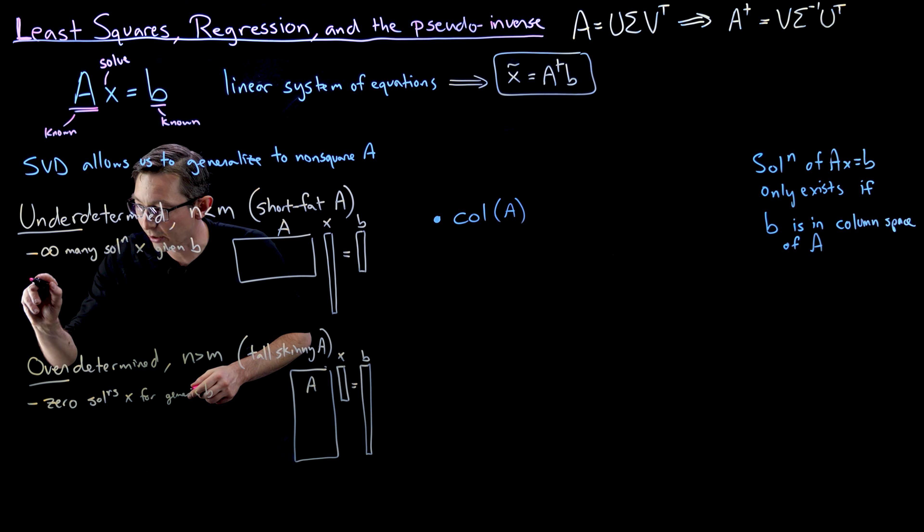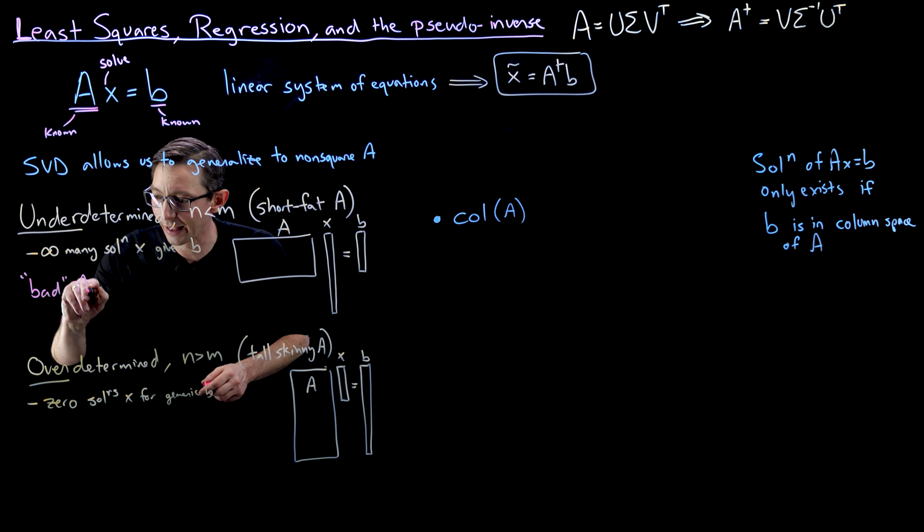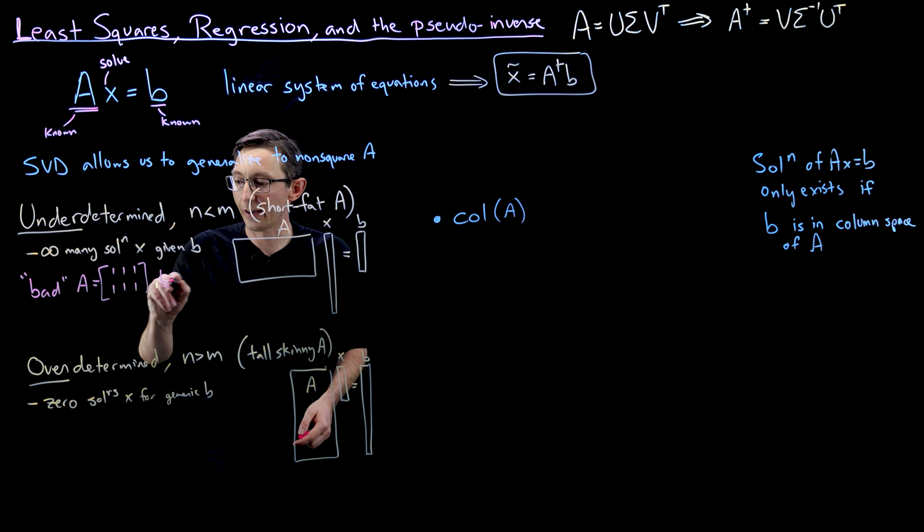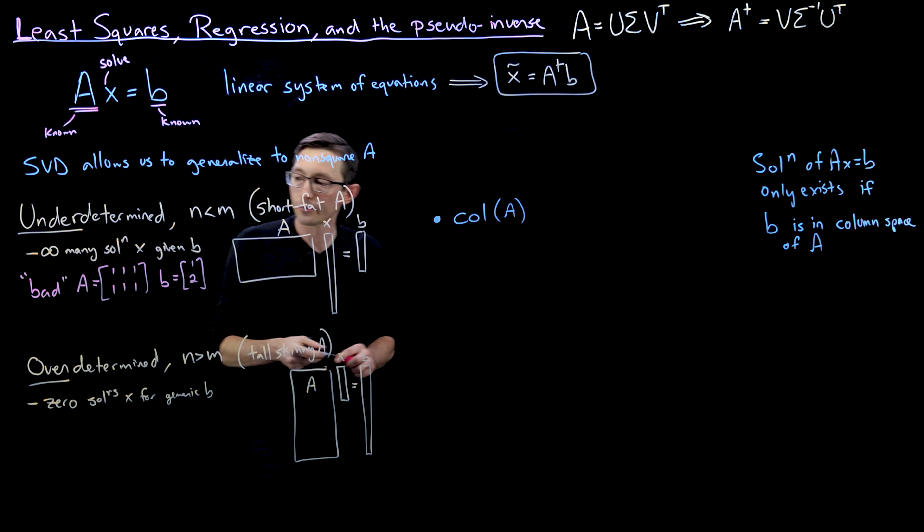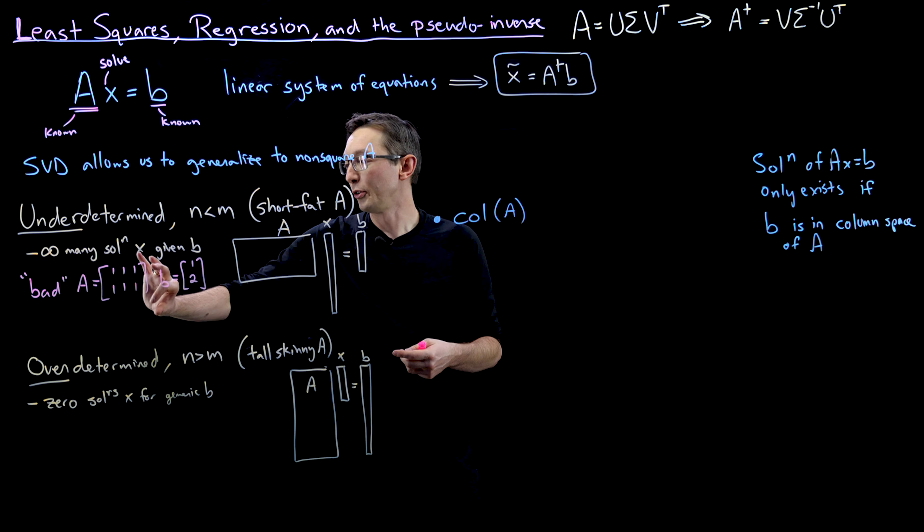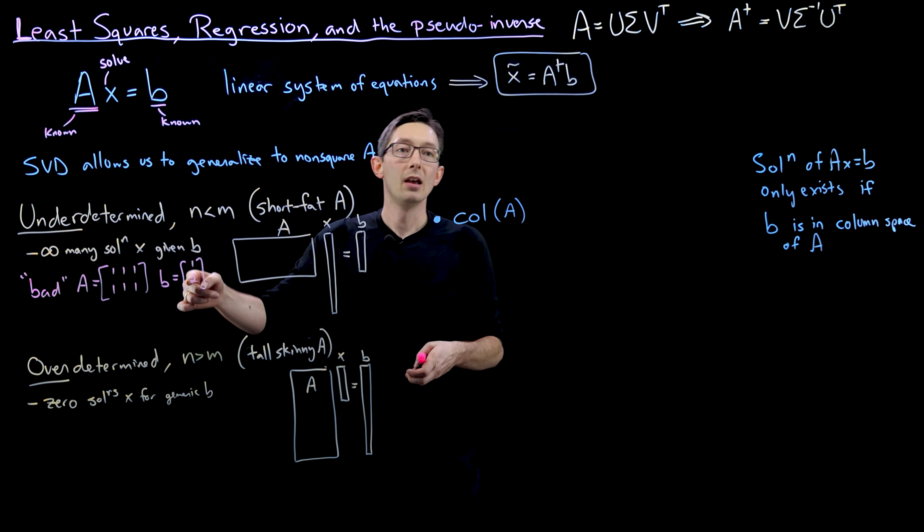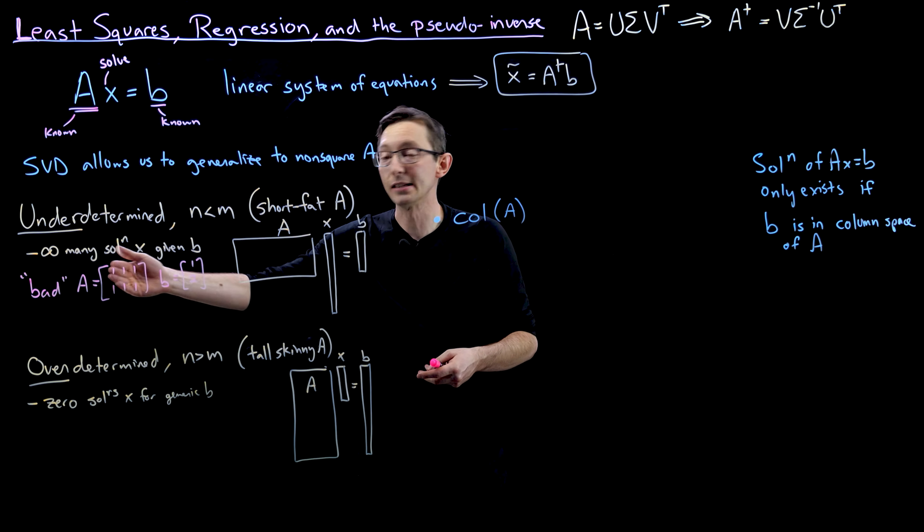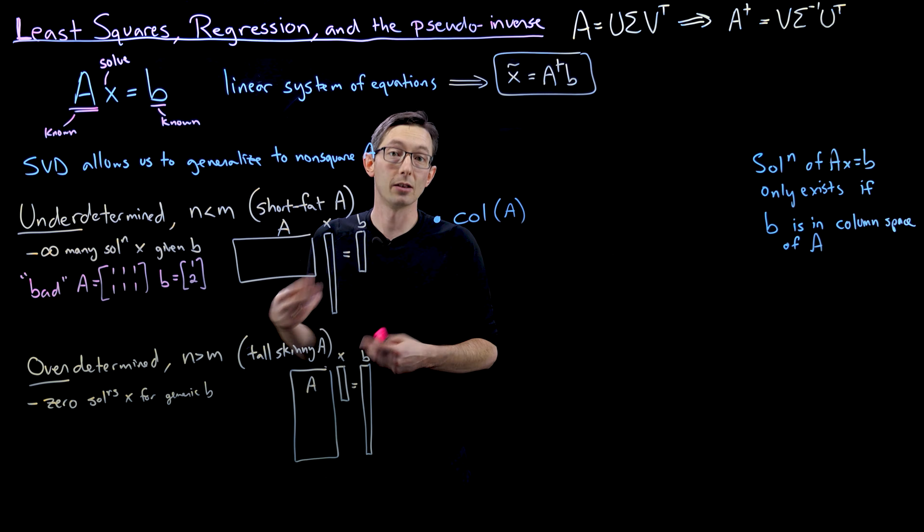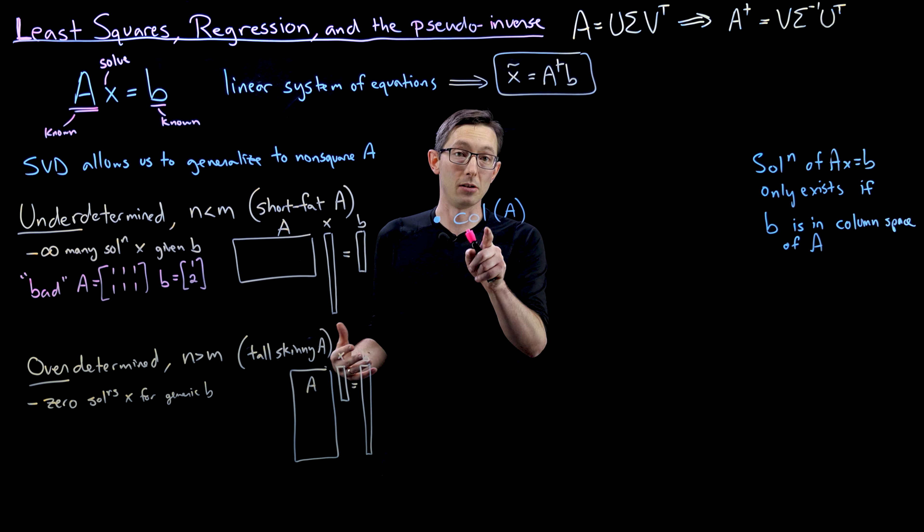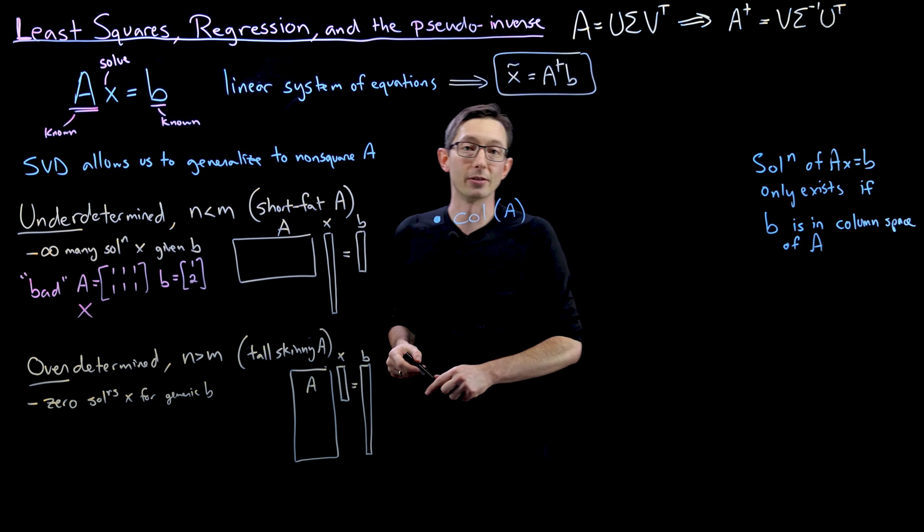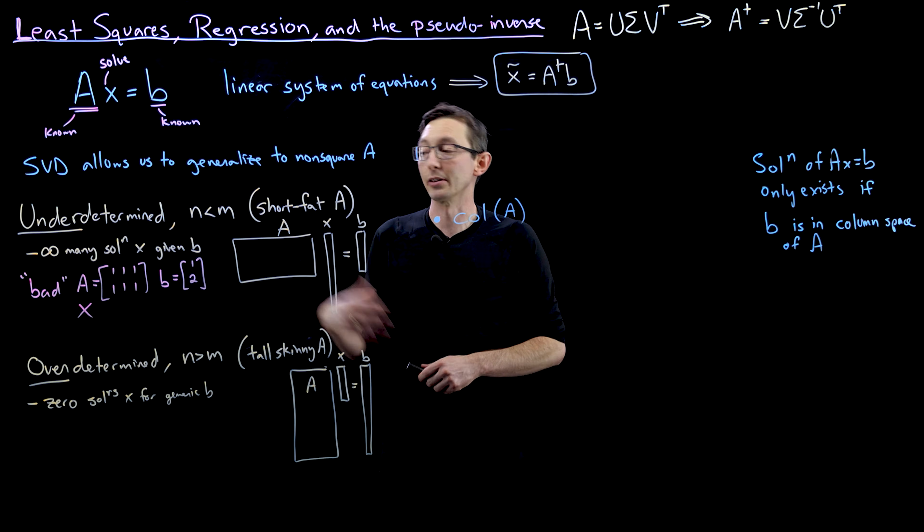So for example, I could cook up a bad A, which is equal to 1, 1, 1, 1, 1, 1, and a corresponding B vector, which is equal to 1, 2. Now I think it's pretty obvious that there is no X vector possible that can multiply this A matrix and give 1, 2. Because 1, 2 is simply not in the span of these column vectors because I chose them to be degenerate. Because this only has one direction in the column space, the 1, 1 direction, and B is not in that column space. So this has no solution. Even though it's kind of this short fat A matrix, I chose a really, really bad short fat A matrix where this is not true.